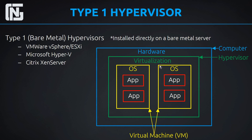From within the hypervisor we then add different virtual machines, and these would be our operating systems. So we'd have a virtual machine that's Windows, one that's Linux, Windows Server, or whatever operating system we want. We create our virtual machines and within those we have our applications. This is a good way to look at how things are layered, and it will make a lot of sense when we look at type 2 as well.